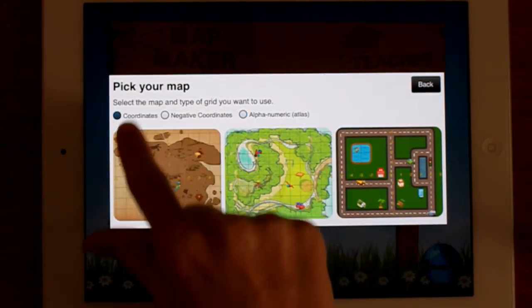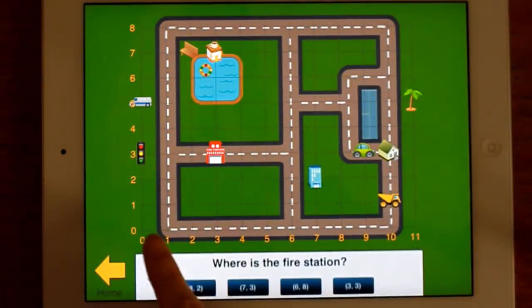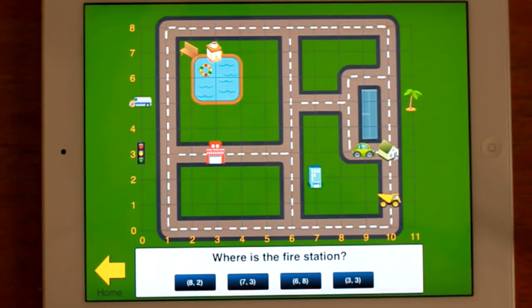So if you change these you've got coordinates. Obviously the number. So it's got the ordered pair down here. So where is the fire station? The fire station is at 3,3. There we go.